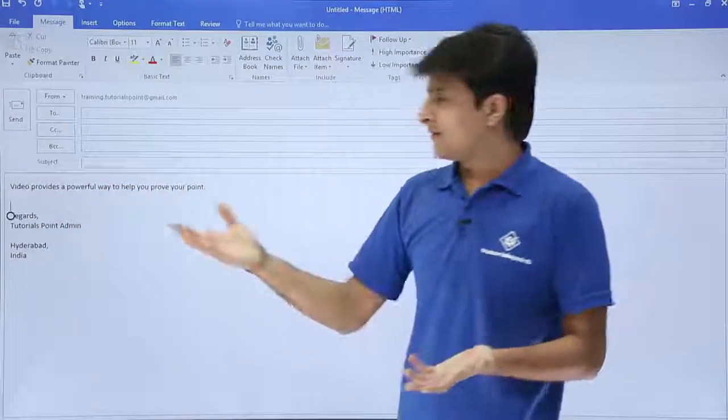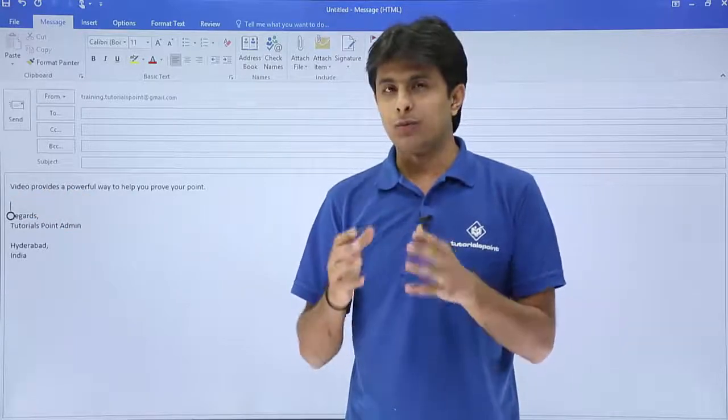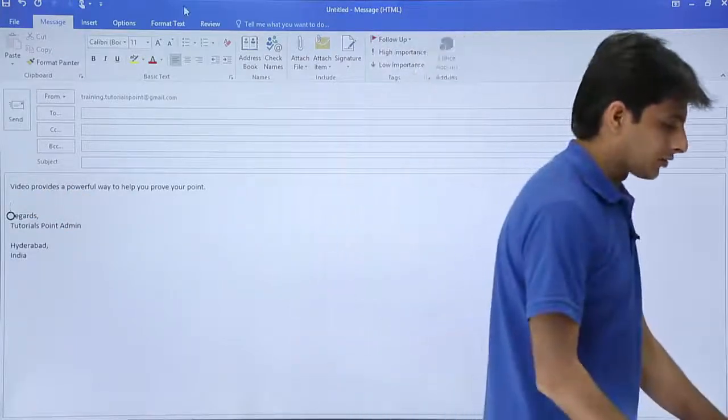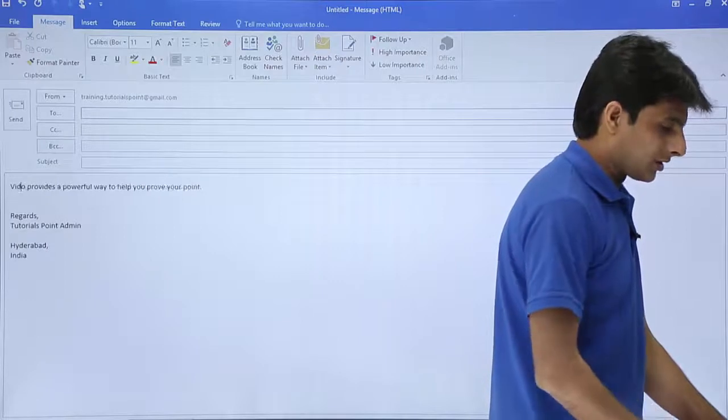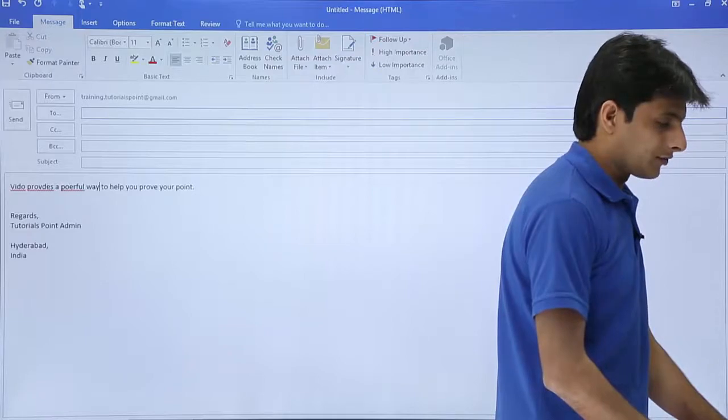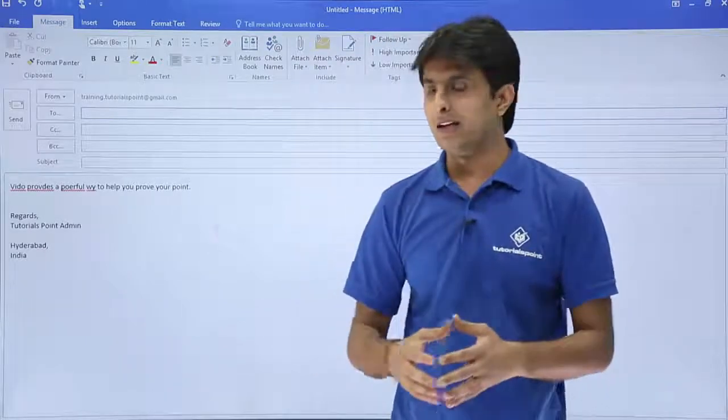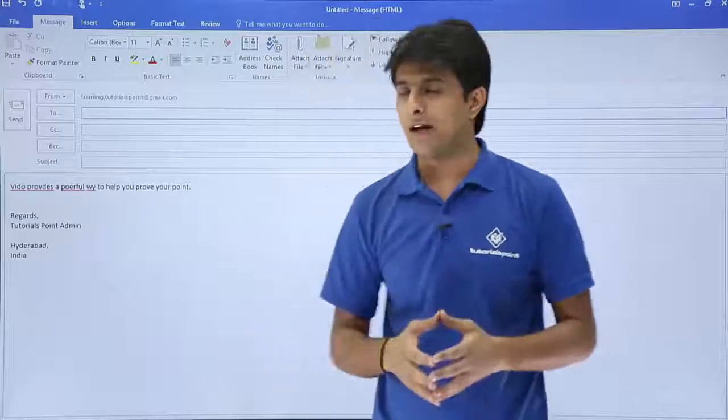This is some text which is given: 'Video provides a powerful way.' Suppose if I try to make some mistakes - I'll just remove one alphabet from each word here. If you see, there's a spelling mistake everywhere. Now if I want to check the spelling in this entire text, how do I do that?